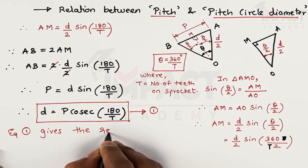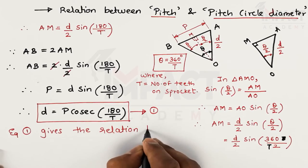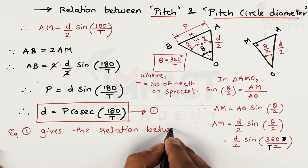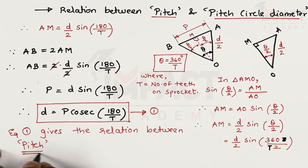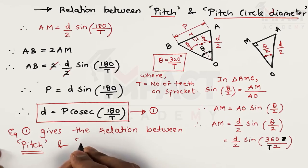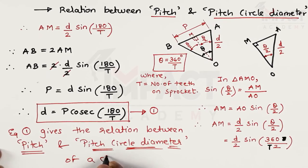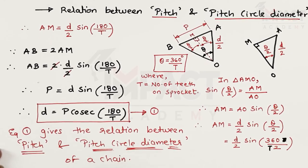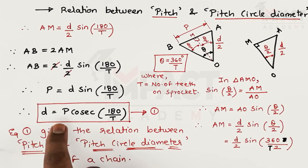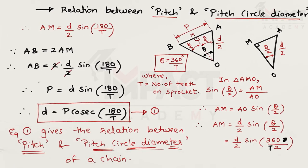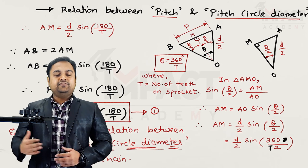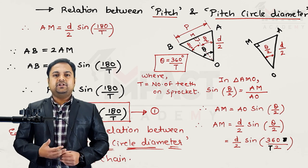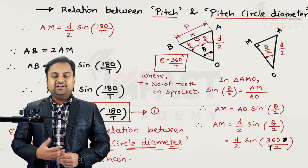Equation 1 gives the relation between the pitch and the pitch circle diameter of a chain. The pitch circle diameter D = P × cosec(180/T), where T is the number of teeth on the sprocket. That concludes this video; in further videos we will see more relations and problems related to chain drives.